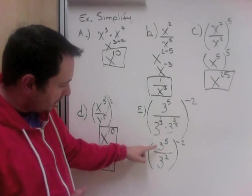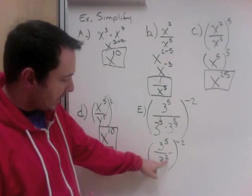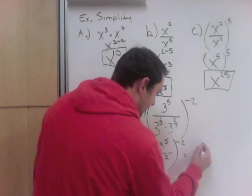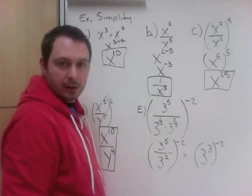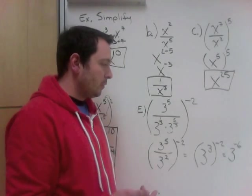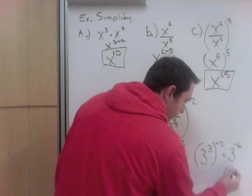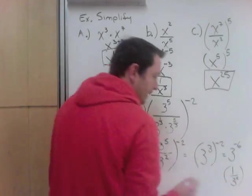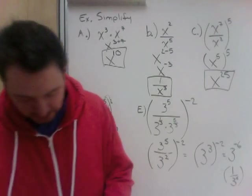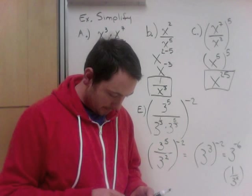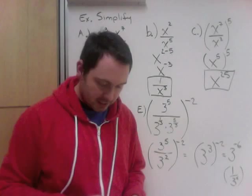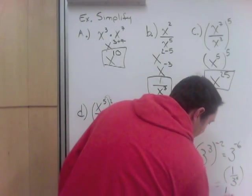Now power law: a power of a power — we multiply. So 3 cubed to the negative 2 gives 3 to the negative 6. We do not like negative exponents in a simplified version, so this becomes 1 over 3 to the power of 6. And 3 to the power of 6 — let's work that out: 3 times 3 times 3 times 3 times 3 times 3 is 729. So the final answer is 1 over 729.